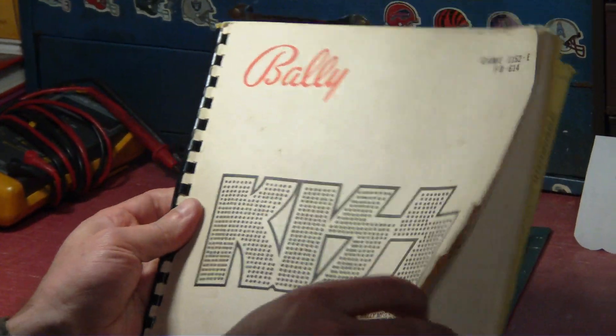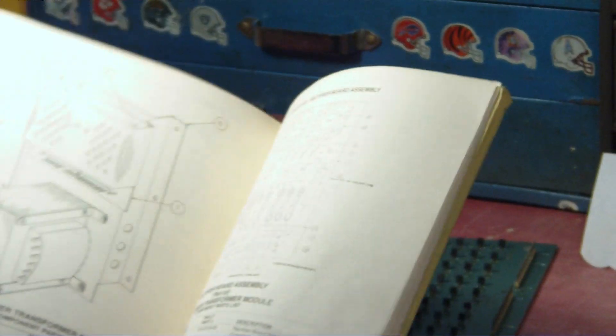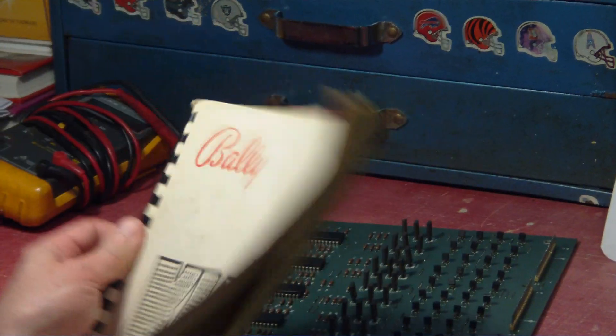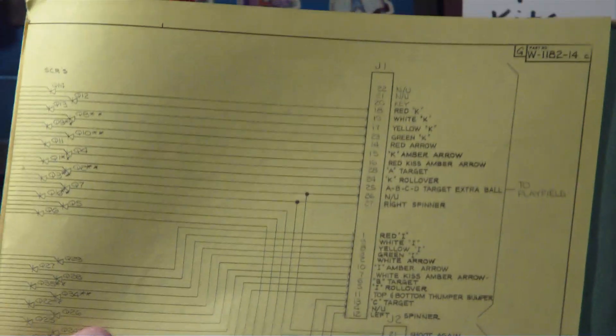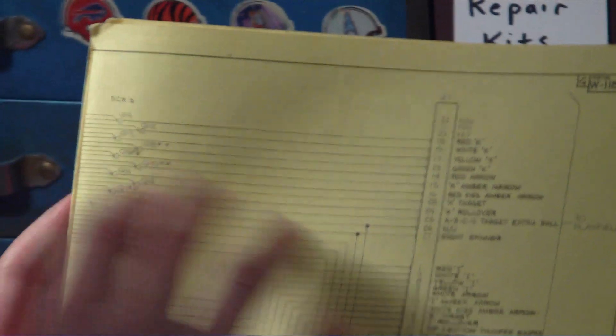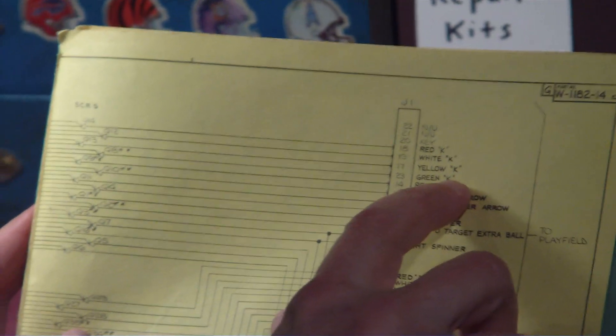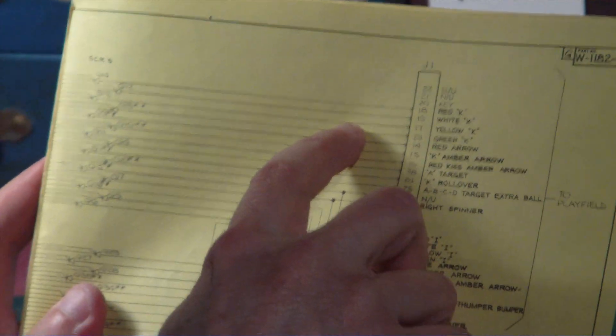In this case it's a KISS manual and we want to go to the back here where all these schematic pages which are yellow here. The page you want to find is this page here. This is your lamp driver schematic and conveniently it lists all of the controlled lamps on your pin. So what you want to do is find a lamp that's bad, like let's say it's the yellow K, you trace back and you find out that's Q13.